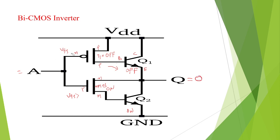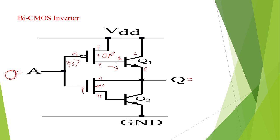I will explain the second case. When you are giving 0 input, what is the output? This 0 — assume it is a negative value. For the NMOS transistor, when you are giving 0 input, there is no sufficient VGS. Automatically it will go to off condition. If it is off, there is no flow from transistor T2 to Q2, so Q2 also goes to off condition.